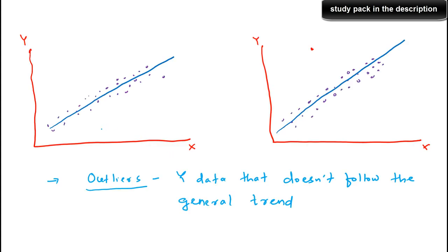We have two regression plots and using these two plots we will try to understand the concepts. Here is a regression plot between y and x, where y is the dependent variable or target variable and x is the independent variable. We assume only one independent variable for convenience, though this can be extended to a multiple regression case with more than one independent variable.